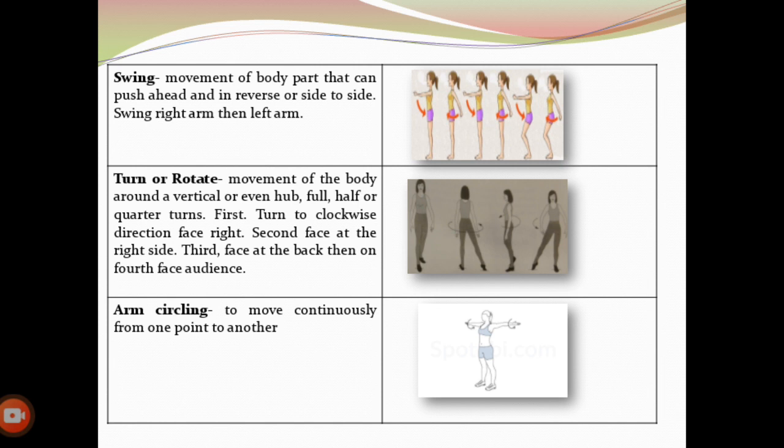For a turn in the clockwise direction: first, face right; second, face the right side; third, face the back; fourth, face the audience. Next is arm circling — moving continuously from one point to another.